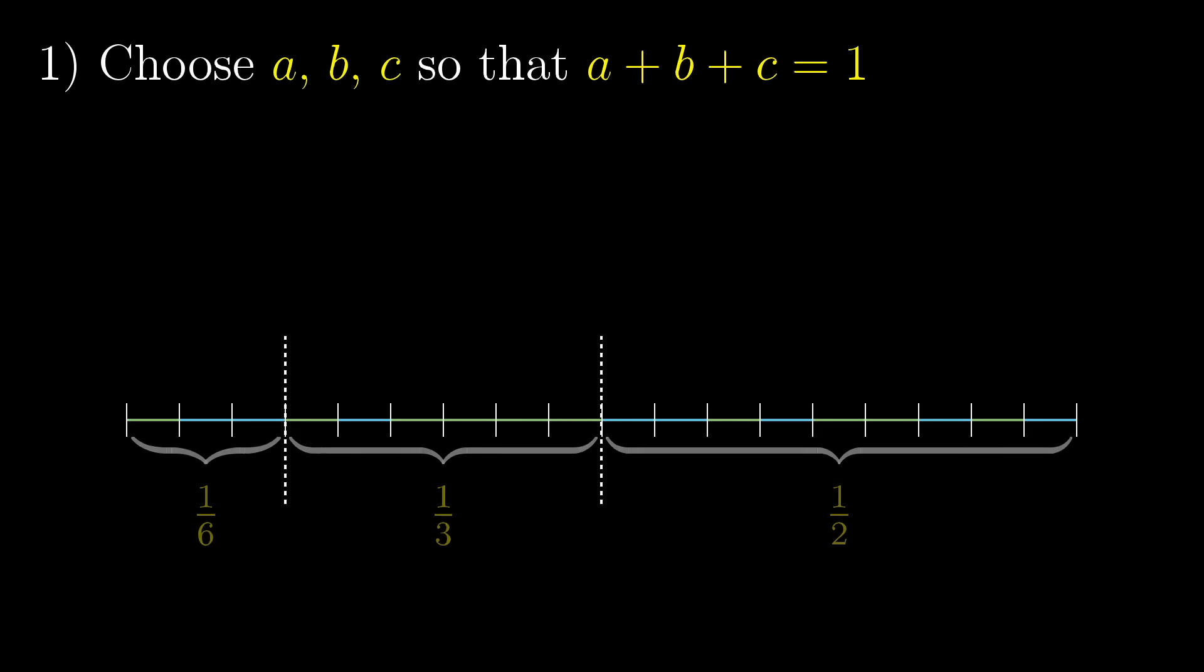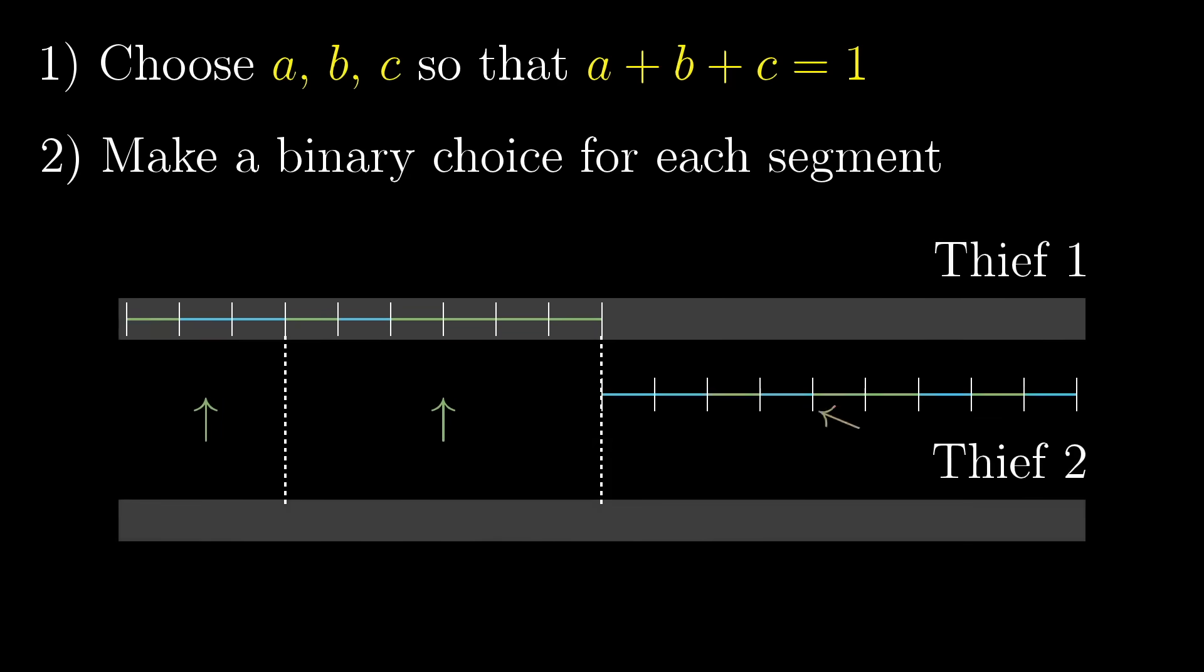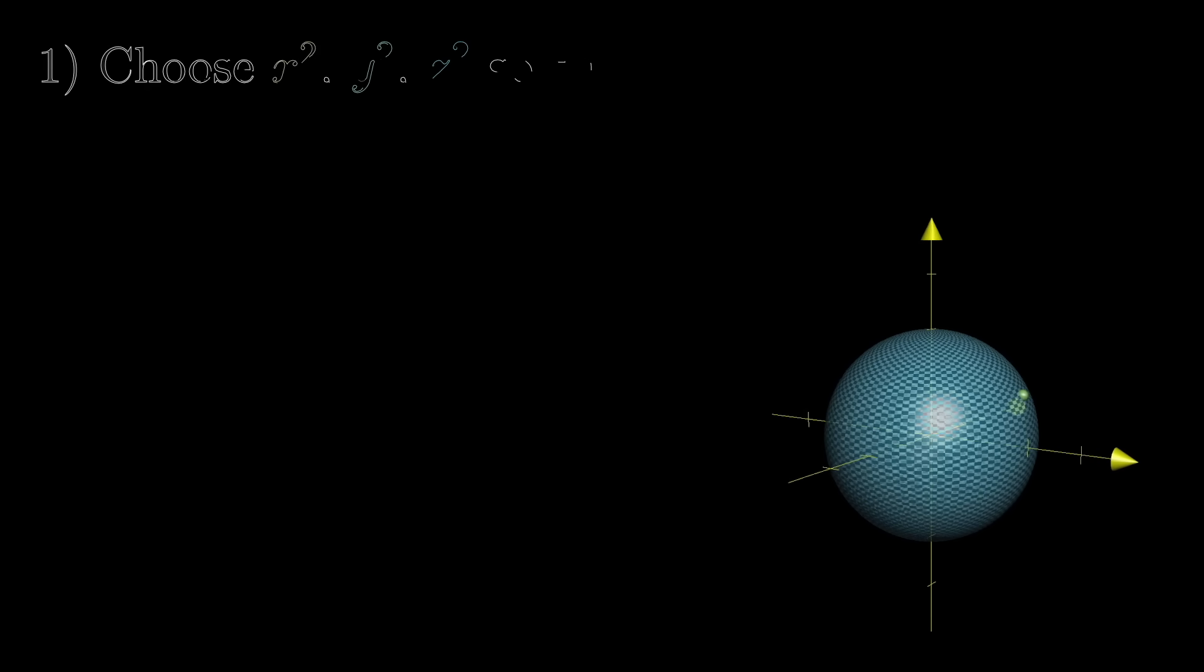After that, you have to make a binary choice for each of these pieces, for whether it goes to thief one or thief two. Now compare that to if I asked you to choose some arbitrary point on a sphere in three-dimensional space, some point with coordinates x, y, z, so that x squared plus y squared plus z squared equals one.